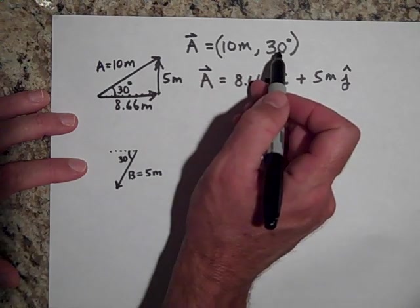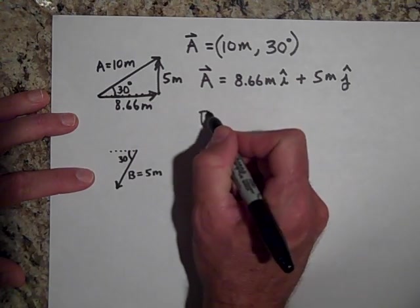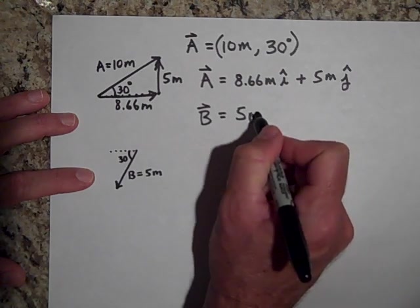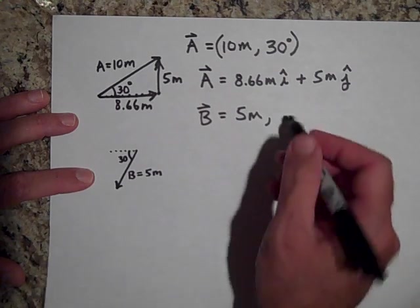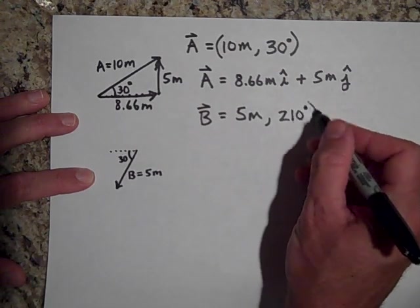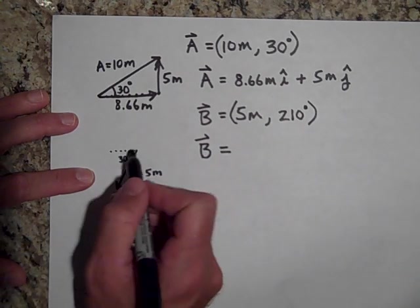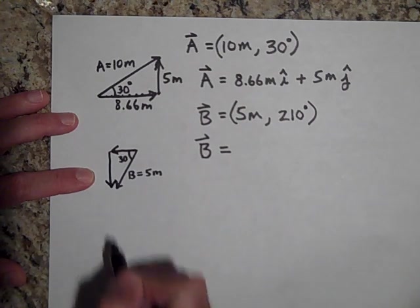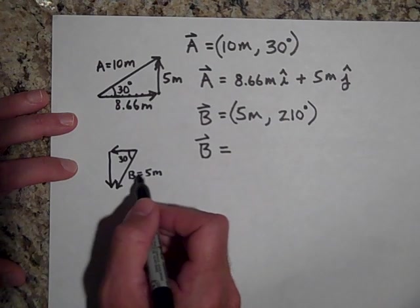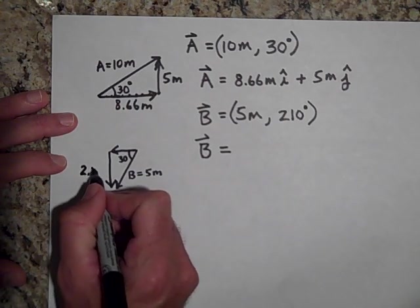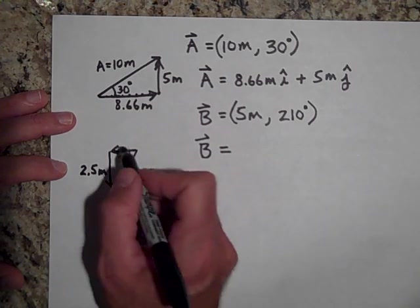One way is with a magnitude and a direction; the other is by giving the two components. Let's do the same for vector B. Vector B is 5 meters at 210 degrees relative to the x-axis — that's 180 plus another 30 degrees. Using unit vectors, if this is 30 degrees and 5 meters, then one component is 2.5 meters and the other is 4.33 meters.